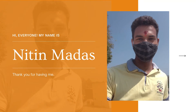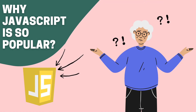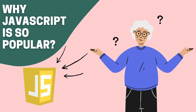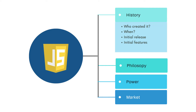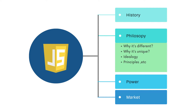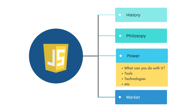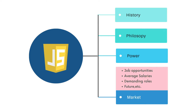Hello crazy coders, I am Nitin. In this video we will continue our discussion on why JavaScript is so popular. We'll try to answer this question by going through four aspects: history, philosophy, power, and market. History and philosophy were covered in previous videos. In this video we'll talk about power, and in the upcoming video we'll talk about market.